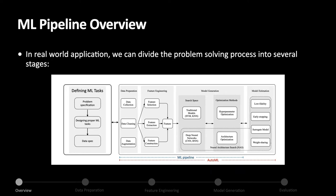To understand how AutoML works, we will start with ML pipelines. In real-world applications, we can divide the problem-solving process into several stages. In the beginning, we need to define our ML task through problem specification, and then design some proper ML task based on the problem. Then set down data specifications based on the ML task. For common ML tasks, we can skip these steps.